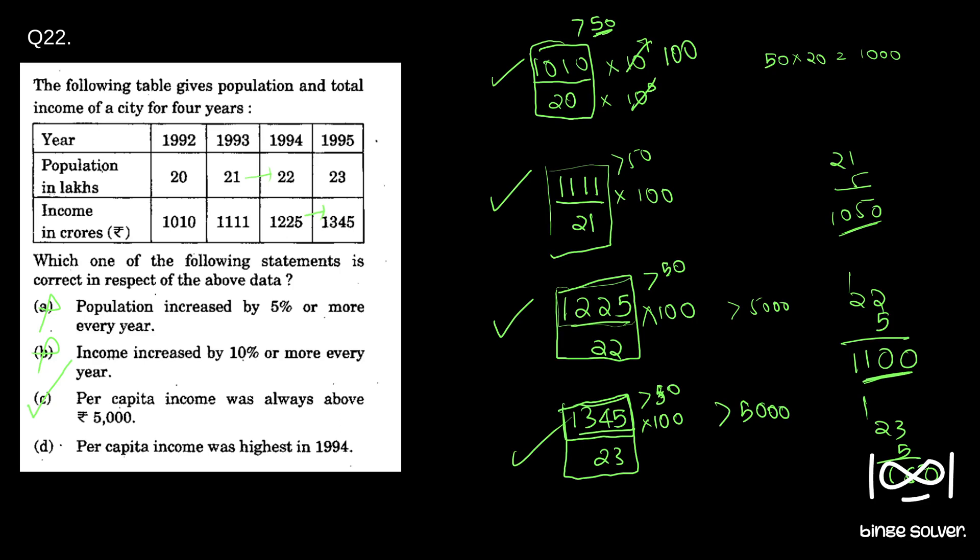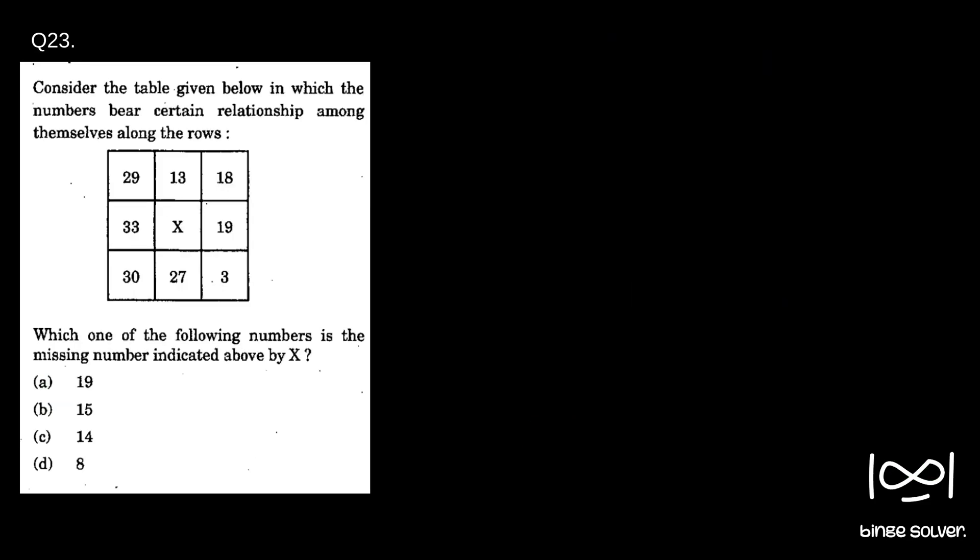Next question, Question 23. Consider the table given below in which the numbers have a certain relationship among themselves along the rows. Which one of the following numbers is the missing number indicated above by X? So if you see, the relation is between these three numbers and these three numbers. From this we should find a relationship and apply it here.